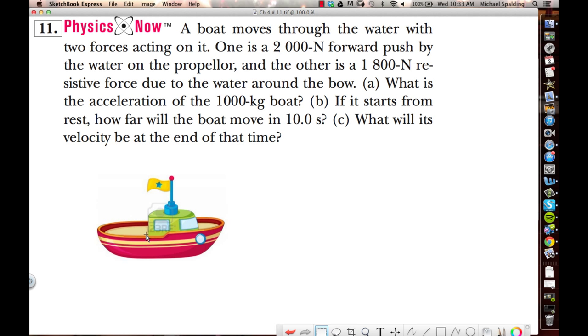Alright, so a boat moves through the water with two forces acting on it. One is a 2,000 newton forward push, so let's get that on here. So here's our boat, so we have a force forward, F equals 2,000 newtons.